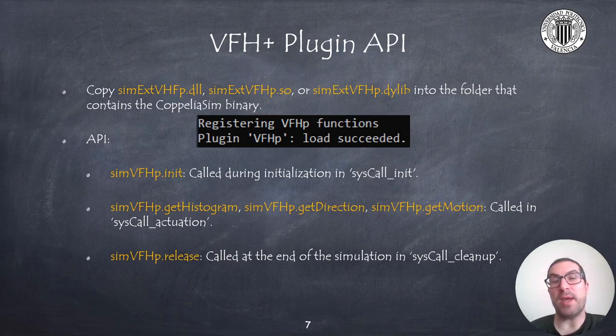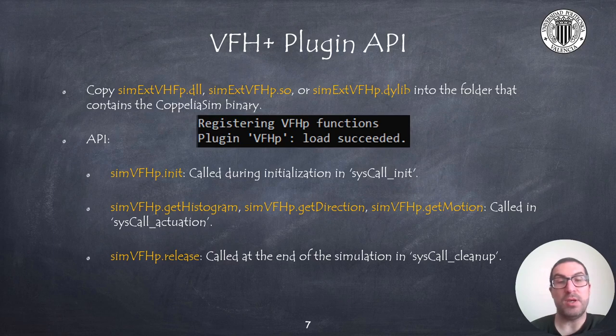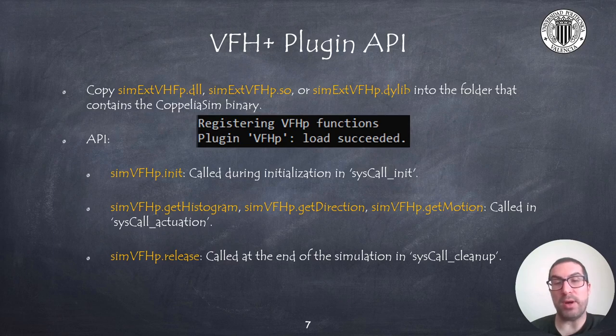So the plugin's API I have created for implementing the VFH plugin algorithm is rather quite simple. It has an initialization function that you must call inside the syscall_init function, that will be in charge of allocating all required memory. It also has three functions that will allow you to obtain polar histograms, the desired movement direction, and also the angular speed of the wheels to be applied. And these functions will normally be called within the syscall_actuation function.